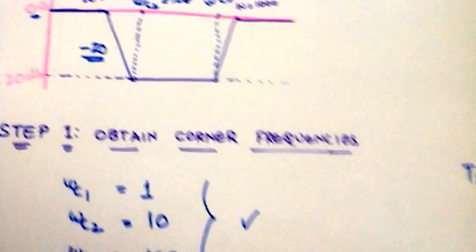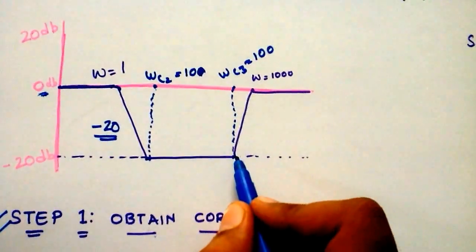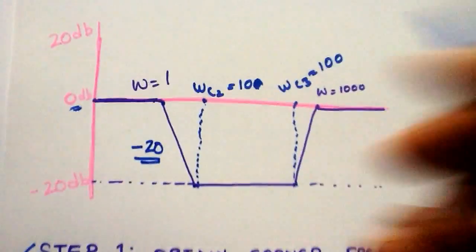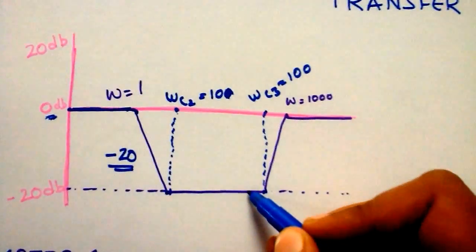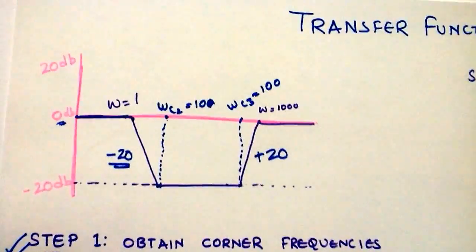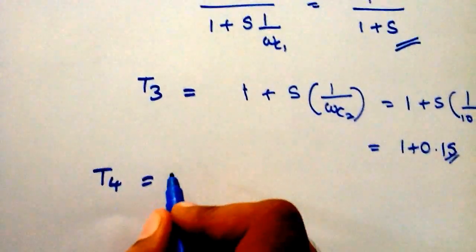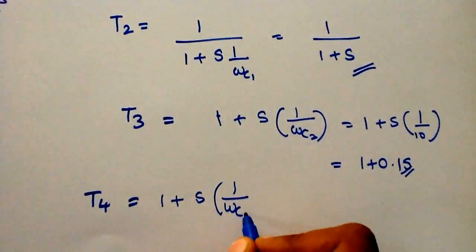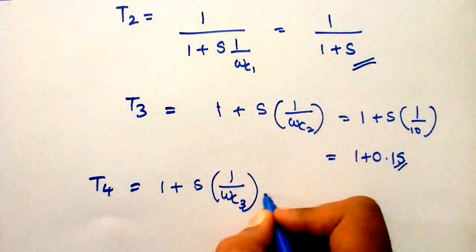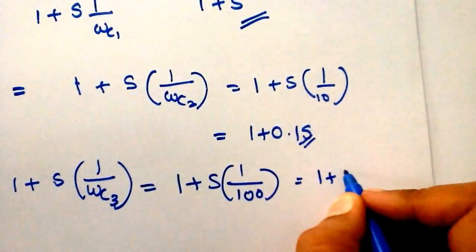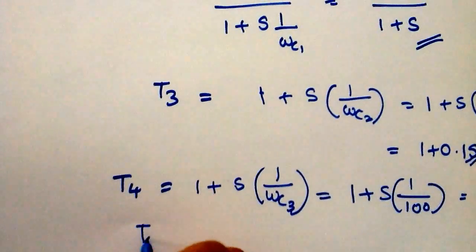Now we want t4. Looking at the diagram, t4 is the term at omega C3 equal to 100. The slope is again increasing, going from 0 to a positive change of plus 20, which means it goes into the numerator: 1 plus s times (1 over 100), which equals 1 plus 0.01s.